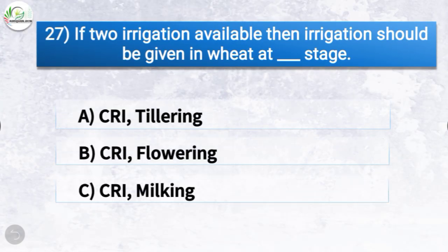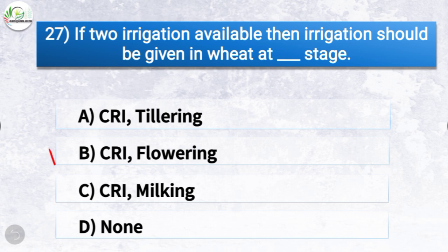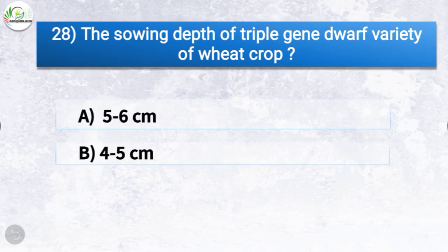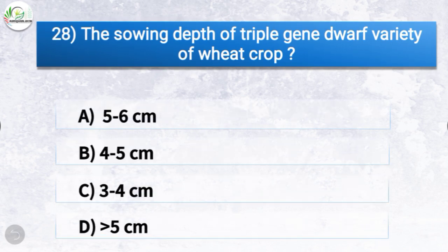Question number twenty-seven: if two irrigations are available, then irrigation should be given in wheat at which stage? The options are CRI-tillering, CRI-flowering, CRI-milking, or none of these. The correct answer is option B, CRI-flowering. So if two irrigations are available, then irrigation should be given in wheat at CRI-flowering stage.